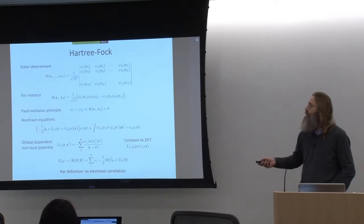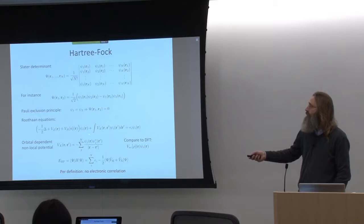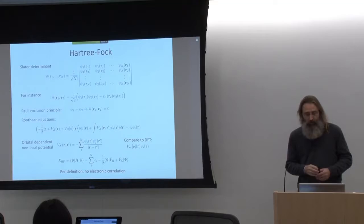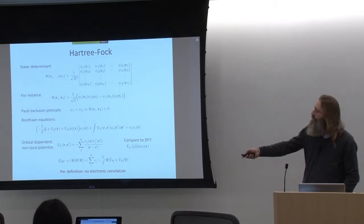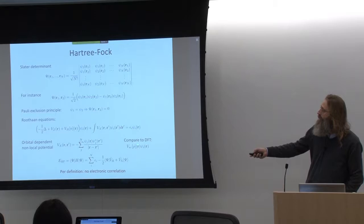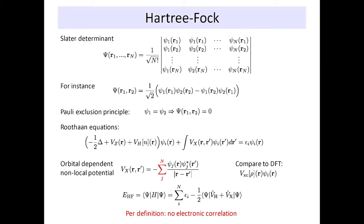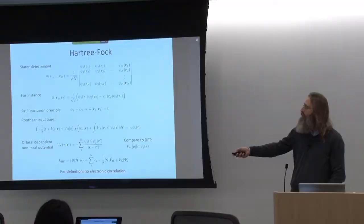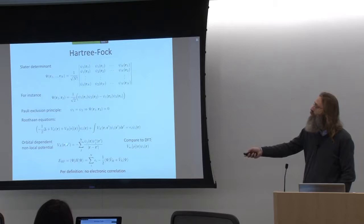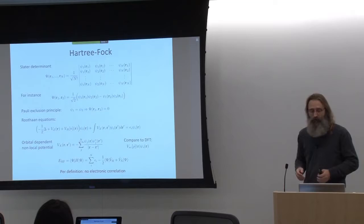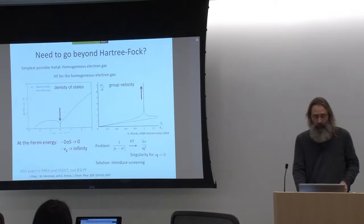So we end up with an expression that does not depend only on the density, but depends on the orbitals themselves. This is the exchange potential, and you see here there's a sum over the occupied orbitals. That has some consequences for the way we solve for these equations, and a sum over states inside this potential has computational consequences as well. It is quite a bit more expensive to evaluate the action of such a potential on another orbital than the exchange-correlation potential in DFT, which is a simple point-by-point multiplication.